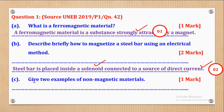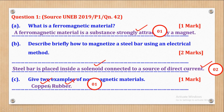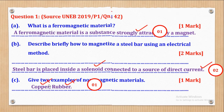Part C says: give two examples of non-magnetic materials. One will be rubber, another one will be copper. Copper is half a mark, rubber is half a mark, so basically that's how the one mark could come about.